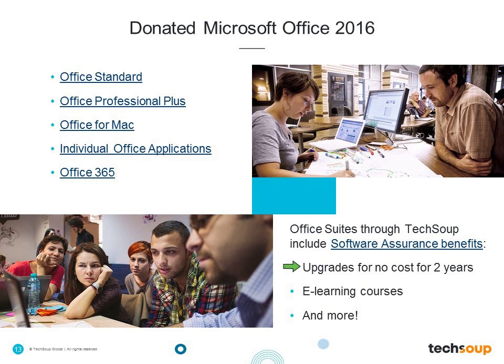Software Assurance also allows you to downgrade for no cost if you find a compatibility issue. It includes e-learning courses for any of the applications you've received through the donation program, accessible directly in the VLSC. You can also access the Home Use Program that allows you to extend your individual license of Office to your home computer. Multi-language packs are available if you have staff who need to access Office in Spanish, Vietnamese, Chinese, or other languages — all at no additional cost. It comes with a lot of extra freebies.